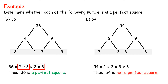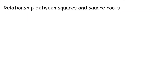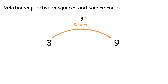Thus, 54 is not a perfect square. Relationship between squares and square roots: 3 squared equals 3 times 3 equals 9, and the square root of 9 equals 3.